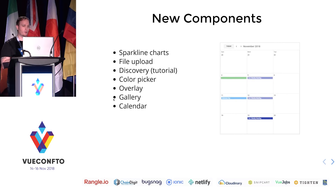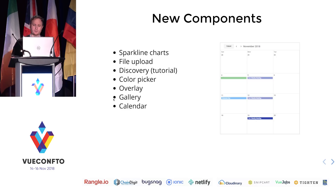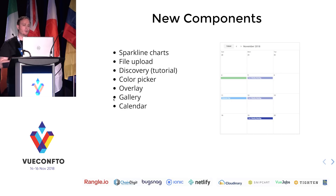Some new components are coming — some this year, some with 2.0. We were a little nervous about this before because we didn't have the ability to properly tree-shake the application and it was just getting bigger. But now that we have that, we can tackle bigger components we really wanted to add, like a calendar — which is very robust but large in size. We also have things like sparklines, file upload, and a discovery overlay. These are all built with the Material Design spec in mind, providing a richer base of components so you don't have to grab from multiple plugins.